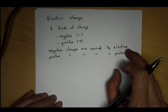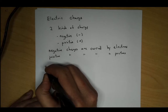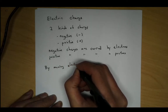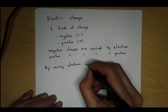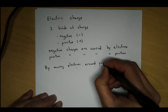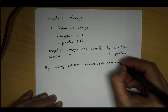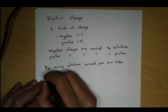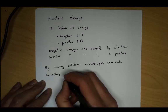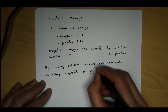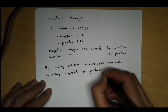Electrons are the ones that usually flow around. By moving electrons around, you can make something either positively charged or negatively charged. If you want to make something positive, you take electrons away. If you want something negatively charged, you add electrons to it.